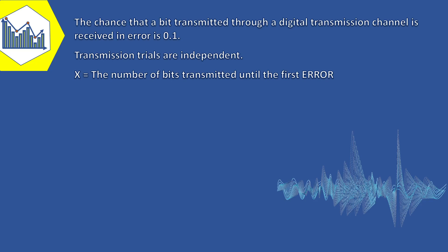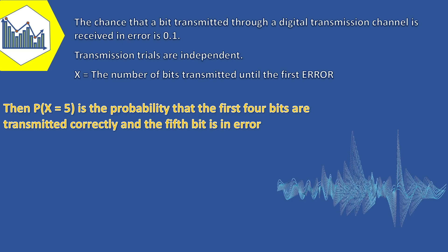Then the probability of X equals 5 is the probability that the first four bits are transmitted correctly and the fifth bit is in error. This event can be denoted as OOOOE where O denotes an OK bit. Because the trials are independent and the probability of a correct transmission is 0.9, the probability of X equals 5 is equal to 0.9 to the power of 4 times 0.1, that is 0.066.